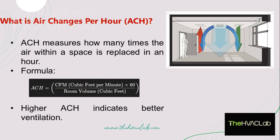ACH measures how many times the air within a space is replaced in an hour. The formula to calculate ACH is the airflow rate in cubic feet per minute multiplied by 60, divided by the room volume in cubic feet.